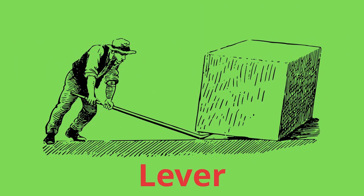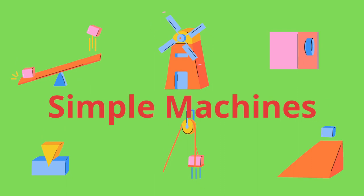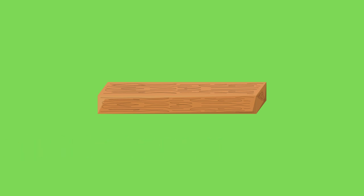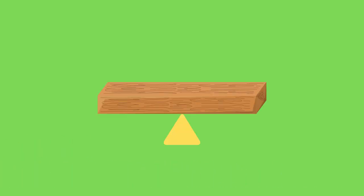A lever is a simple machine. Simple machines make work easier to do. Levers are made up of a beam and something called a fulcrum. The fulcrum is the point on which the beam pivots or moves.